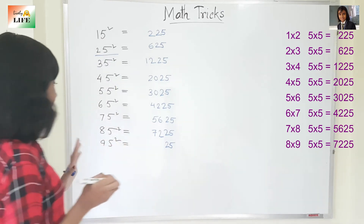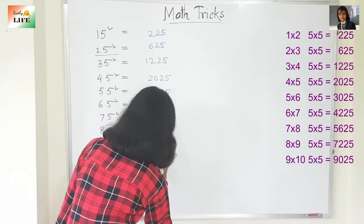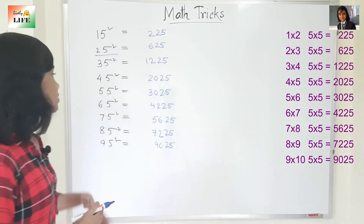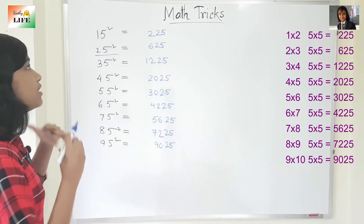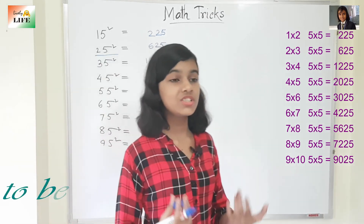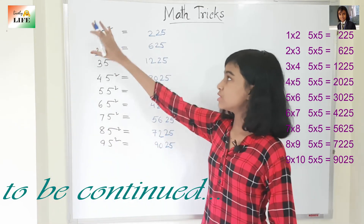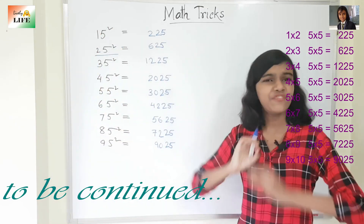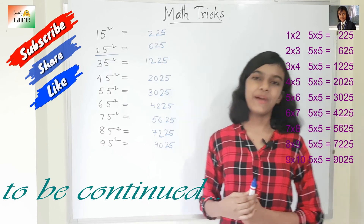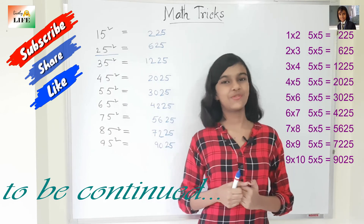And 95 square: 9 into 10 is 90, so the answer is 9025. You can see it is very easy — we can find out the squares of numbers ending with 5 in a very easy way in seconds. So this was the first math trick. Now let's move to the second one.